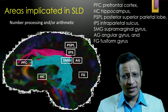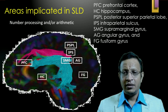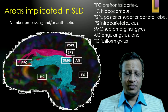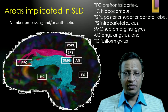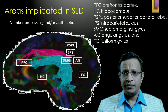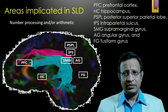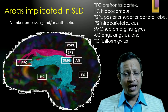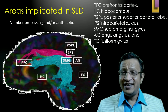Various brain areas have been found to be inactivated in SLD. The prefrontal cortex plays a very important role in attention, scanning, executive function, and decision making. The hippocampus is implicated with regard to memory — both verbal, non-verbal, and auditory memory. The posterior superior parietal lobe is where arithmetic and calculation are processed. The intraparietal circuits, supramarginal gyrus, angular gyrus, and fusiform gyrus have been implicated in number processing and arithmetic — these are the areas implicated in SLD.